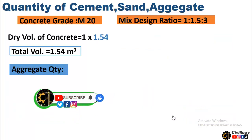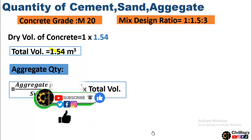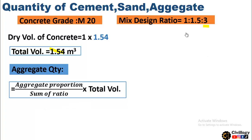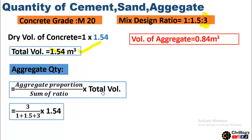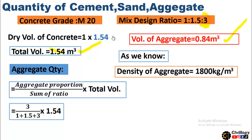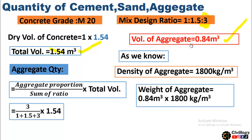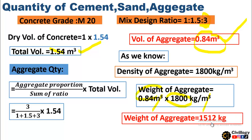Now to calculate for coarse aggregate: the total volume is 1.54 and the same formula is used — aggregate proportion divided by sum of ratio, multiplied by total volume. Aggregate proportion in this mix design is 3. We will get the volume of aggregate as 0.84 cubic meters. The density of aggregate is normally between 1600 to 1870 kg per cubic meter; here we are using 1800 kg per cubic meter. Multiplying volume by density, the weight comes out to be 1512 kg for this mix design.